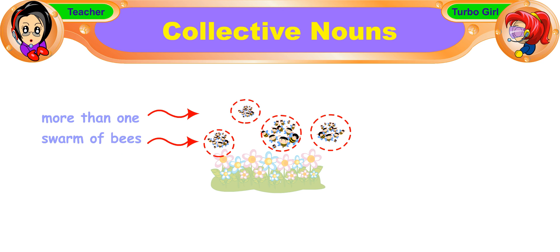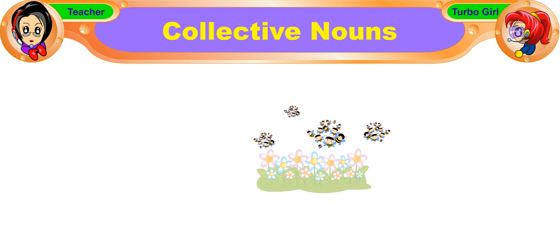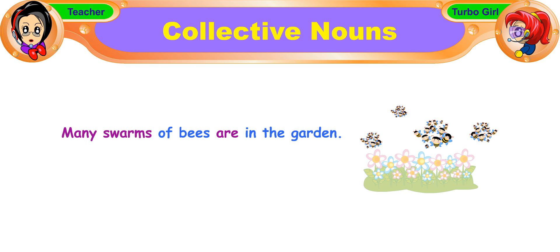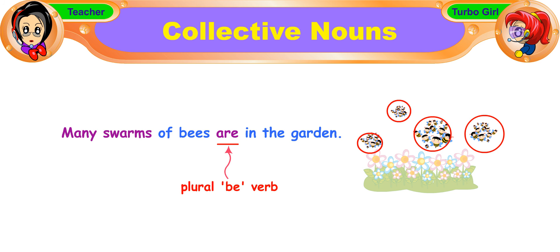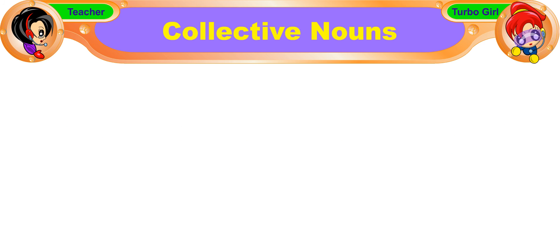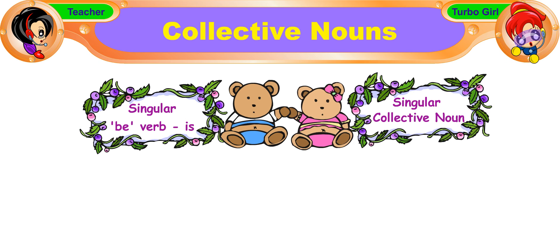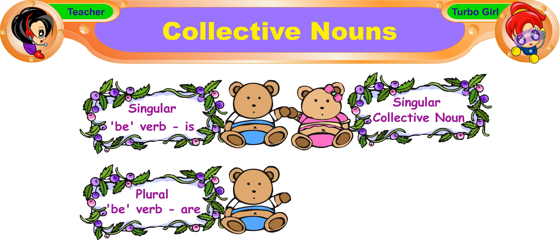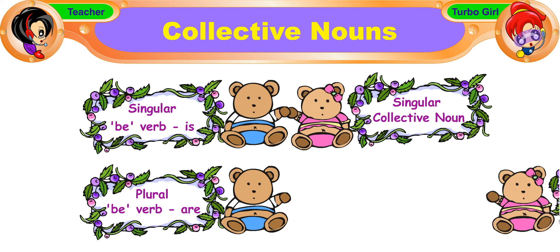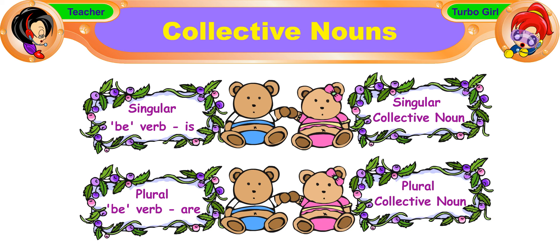When there is more than one swarm of bees, we say: many swarms of bees are in the garden. We use the plural be verb 'are' to refer to more than one swarm of bees. So we partner a singular be verb 'is' with a singular collective noun, and a plural be verb 'are' with a plural collective noun.